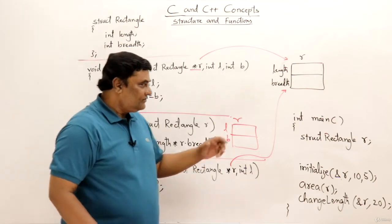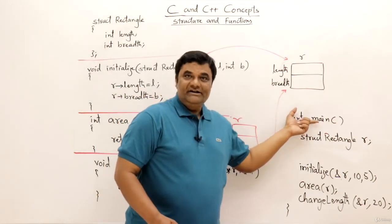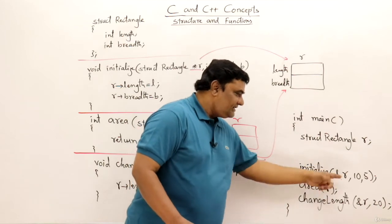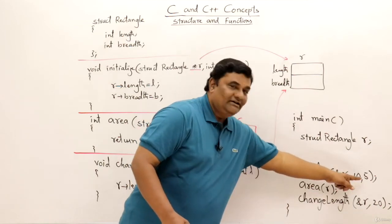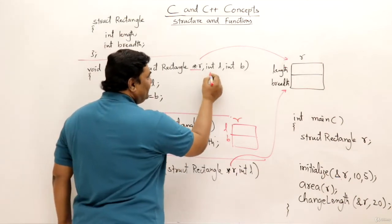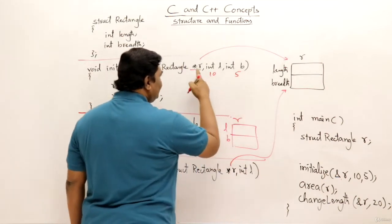Now let us see the working of this entire code. So let us start executing main function having a rectangle this one. Then call initialize function by sending an address and new value length and breadth. So length and breadth, this is called by value. 10 is copied in this one, 5 is copied in this one.